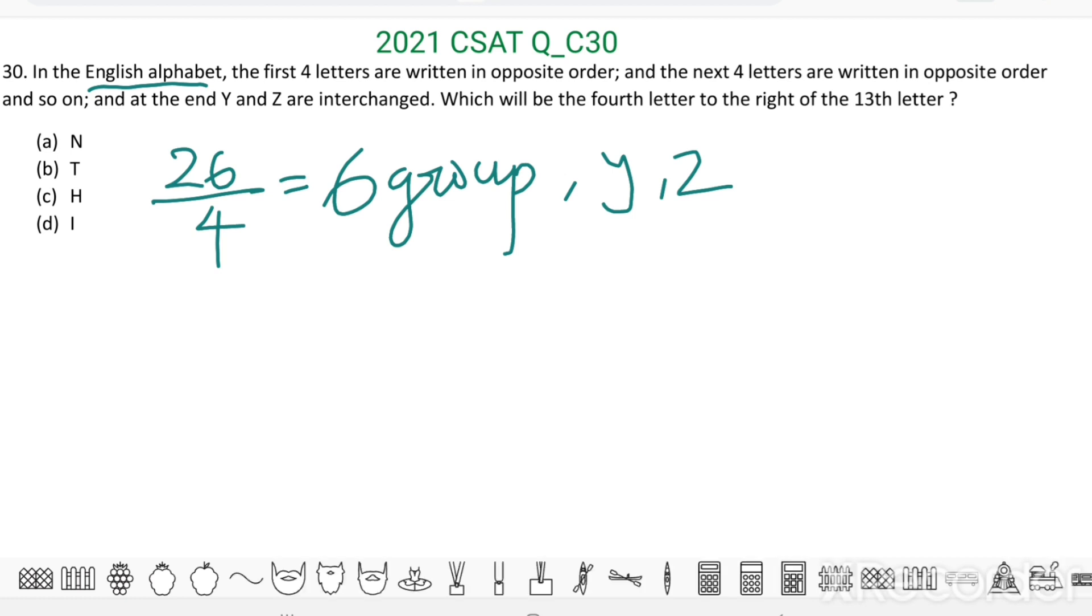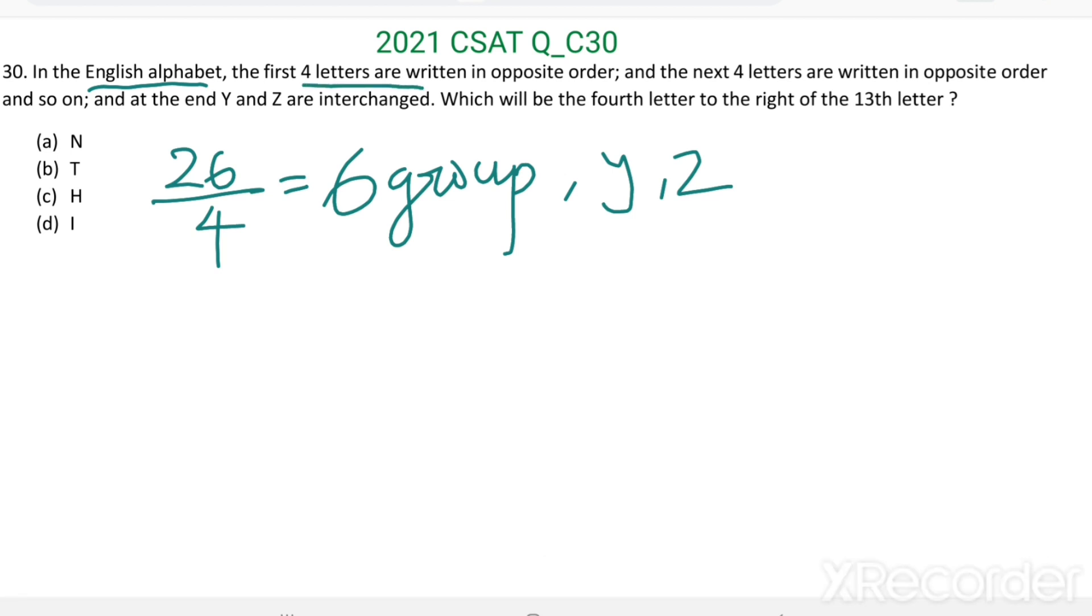Then letters in these six groups are written in opposite order. Then which will be the fourth letter to the right of the thirteenth letter.